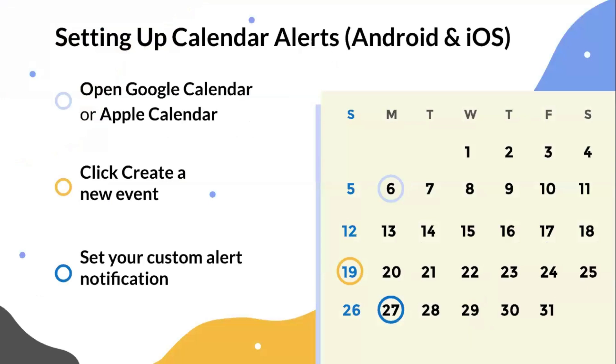To set up calendar alerts on Android or iOS, you can open Google Calendar or Apple Calendar. From there, go to create a new event and then set your custom alert notification.